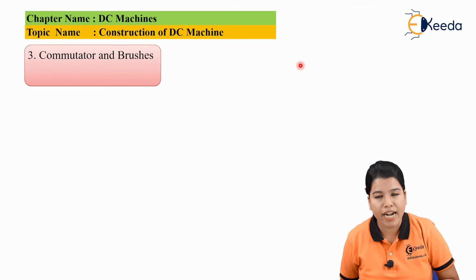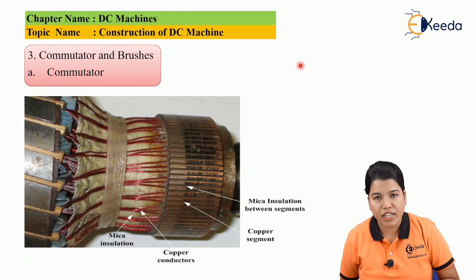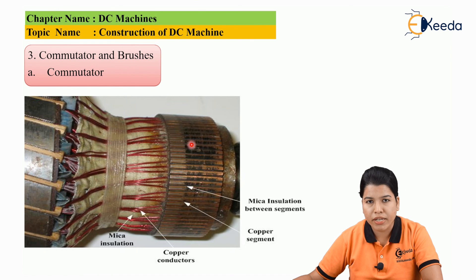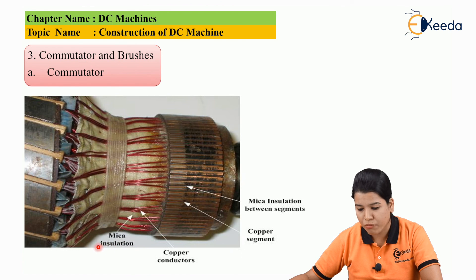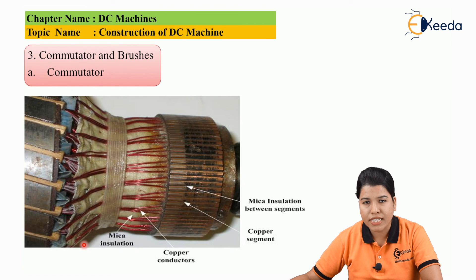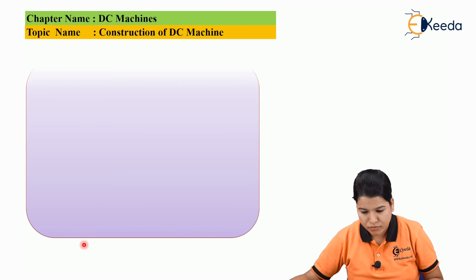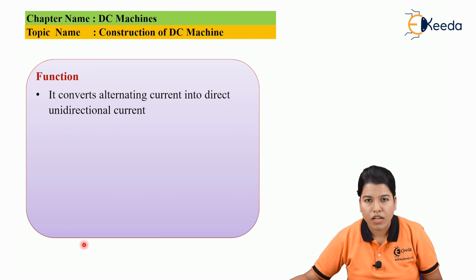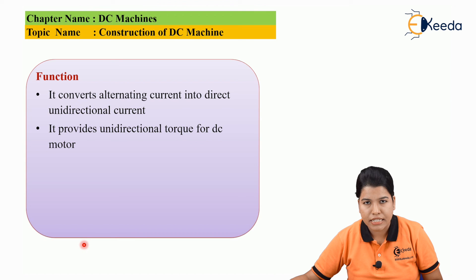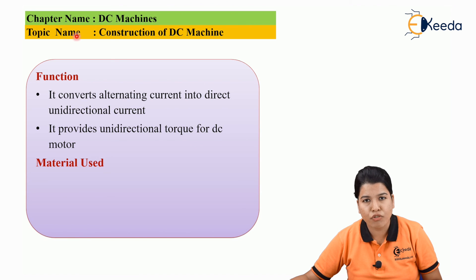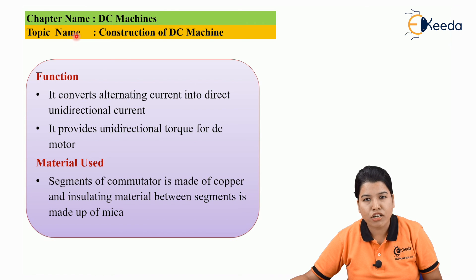The next part of the DC machine is commutator and brushes. The commutator is made up of a number of thin copper segments, with insulation of mica between each segment. The main function of commutator is: it converts the alternating current into direct current, and it provides unidirectional torque for the DC machine. Segments of commutator are made up of copper and the insulation between the commutator segments is made up of mica.